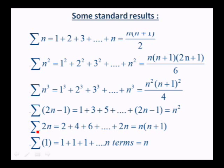Standard results: Σn = n(n+1)/2; Σn² = n(n+1)(2n+1)/6; Σn³ = [n(n+1)/2]²; Σ(2n−1) = n² (sum of first n odd numbers); sum of first n even numbers 2+4+...+2n = n(n+1); and Σ1 (summing 1 to n terms) = n.